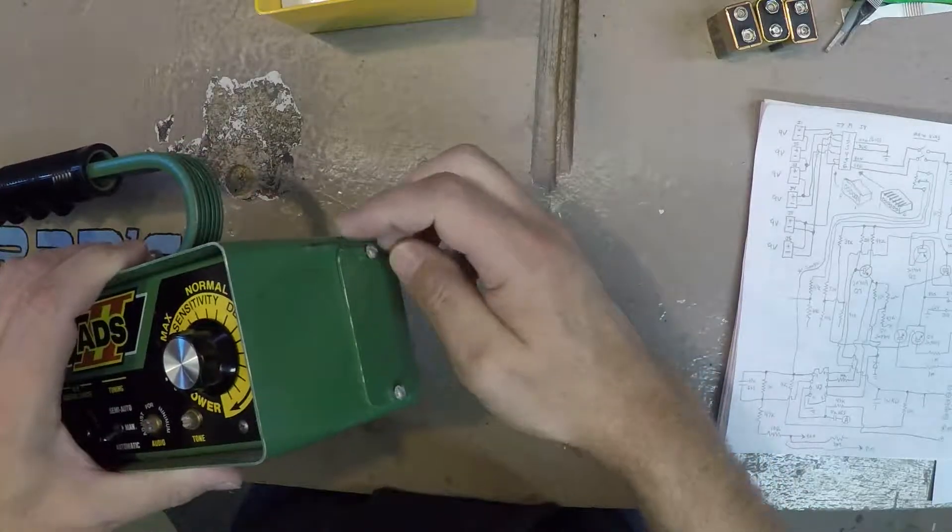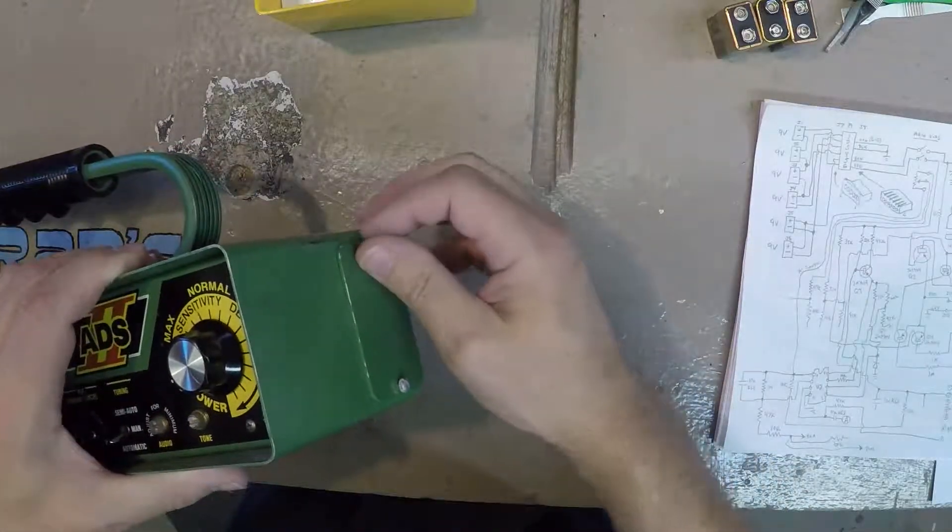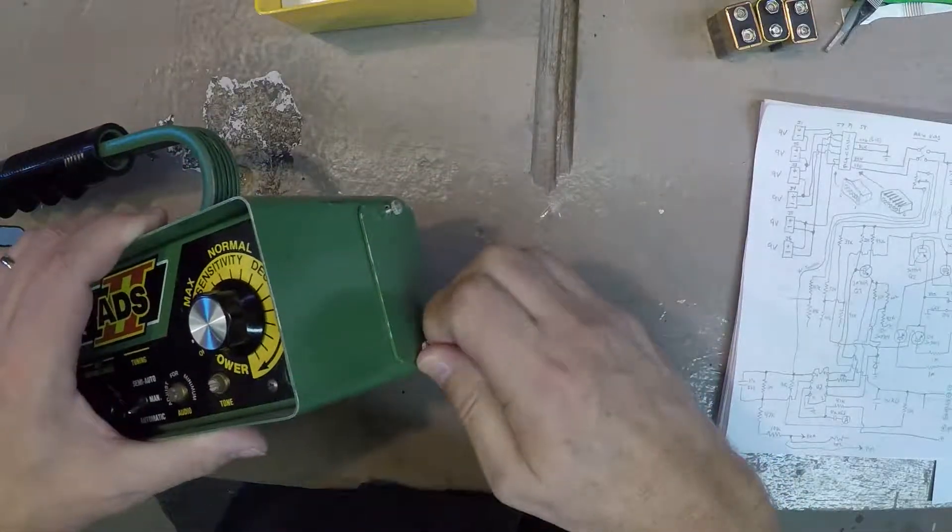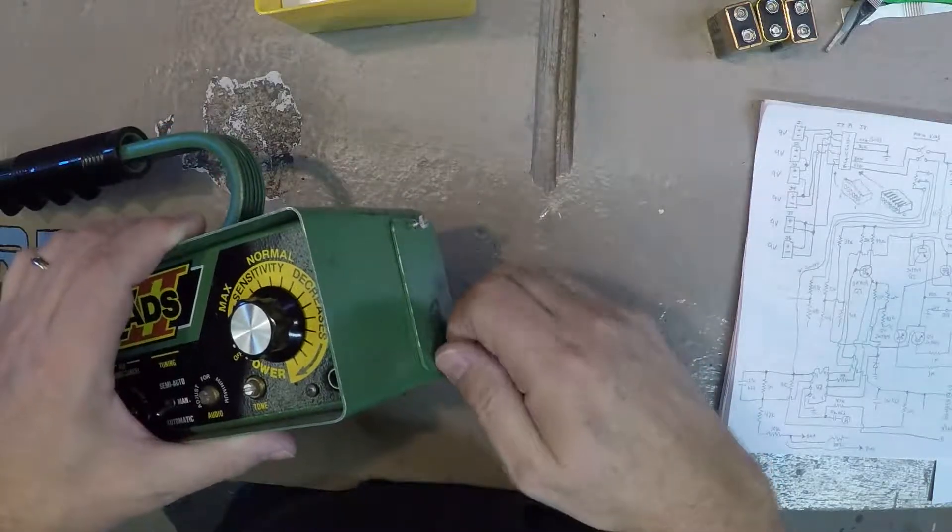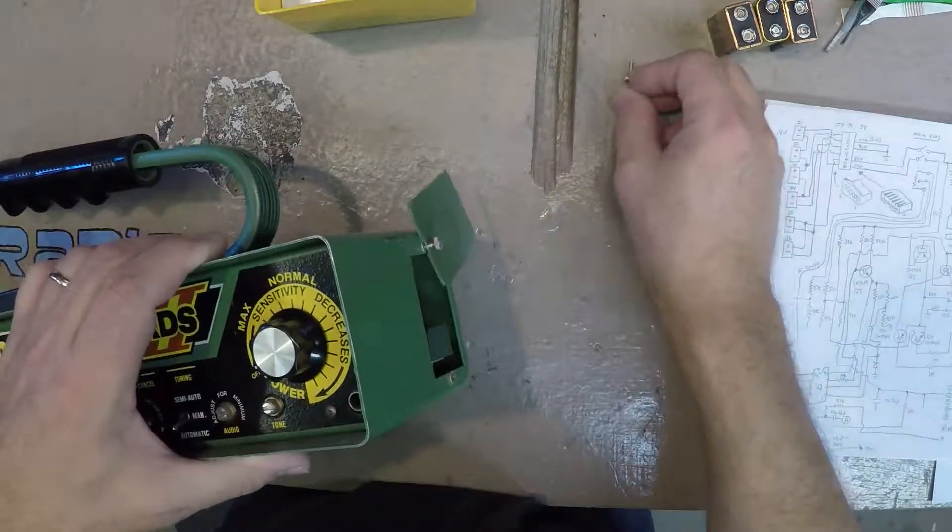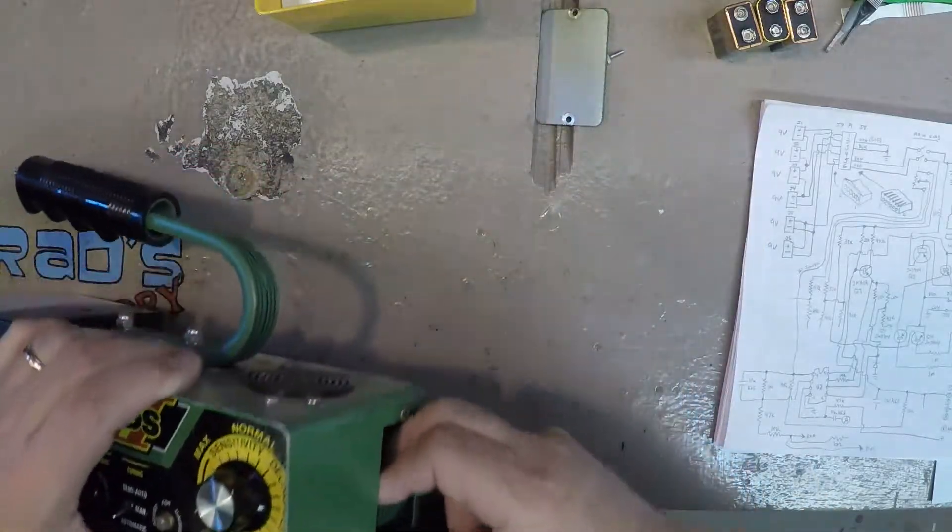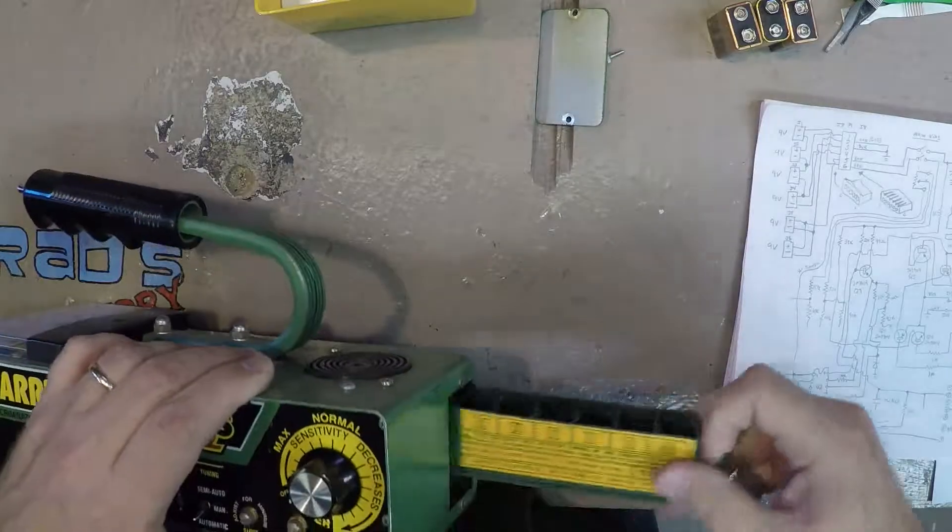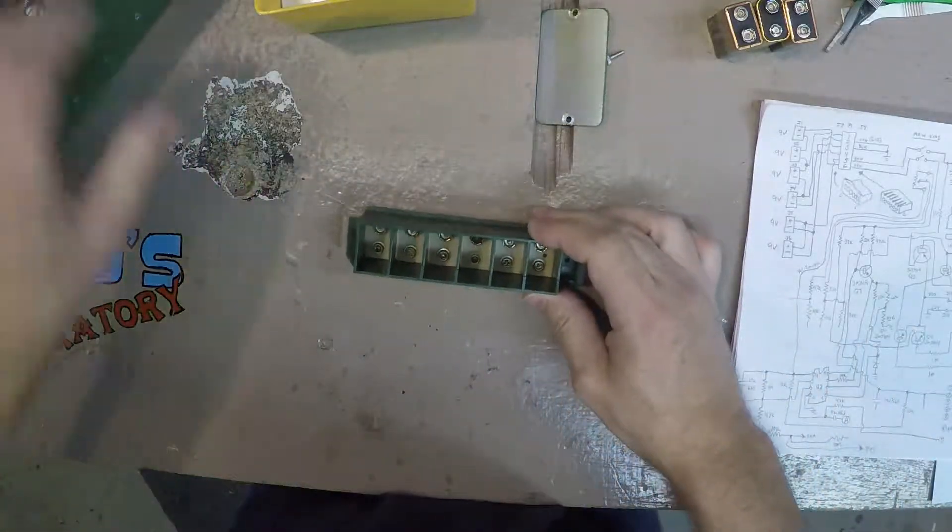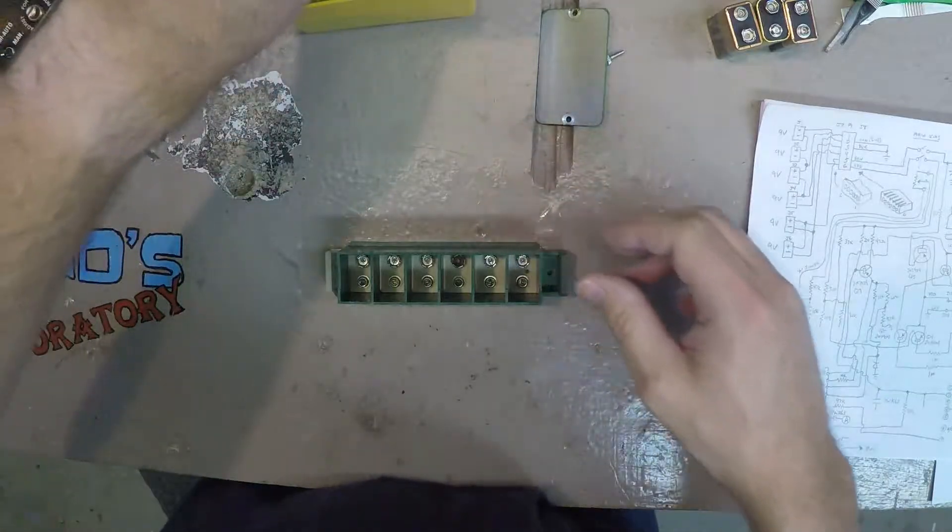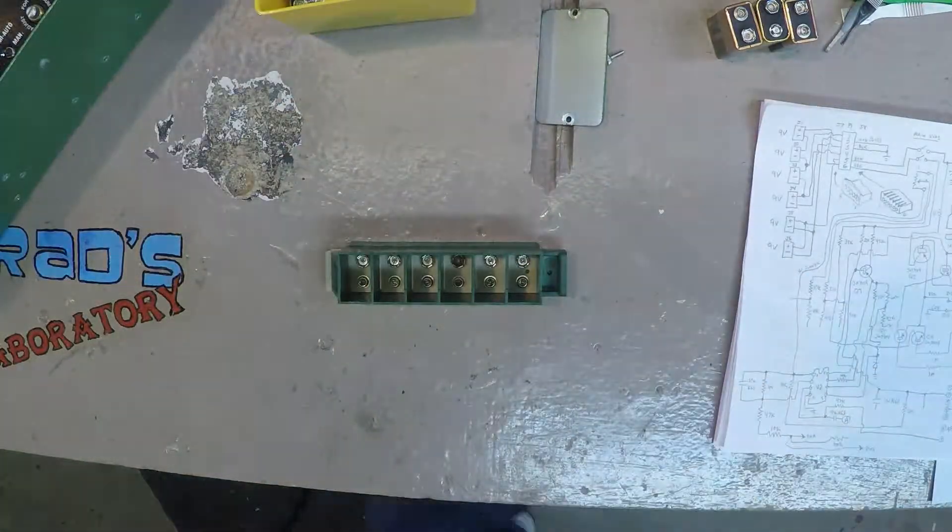I figured what I would do is just do a quick video and show with the meter what the voltages are coming off that connector, and then we can kind of figure it out from there. The schematic's a little confusing, so we'll just jam some batteries in here. I've got to make sure my batteries are good first.